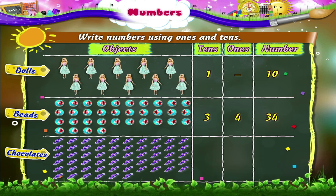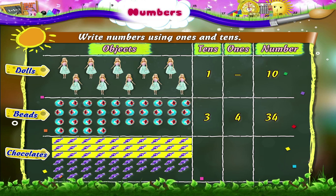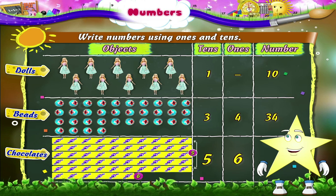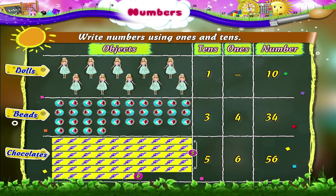Let's look at one more example. Here are a few groups of chocolates. Let us count the number of groups of 10 chocolates: 1, 2, 3, 4, 5. There are 5 groups of 10 chocolates, so we write it as 5 10s. The 6th group has only 6 chocolates, written as 6 1s. Which number does 5 10s and 6 1s make? 5 10s and 6 1s make the number 56.